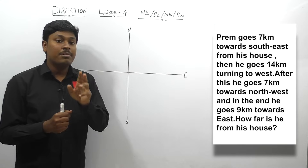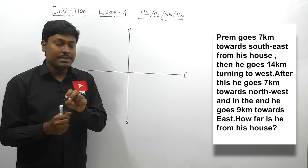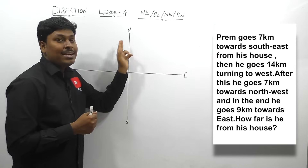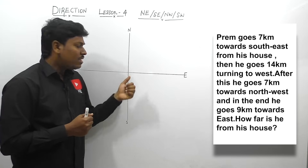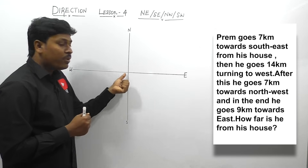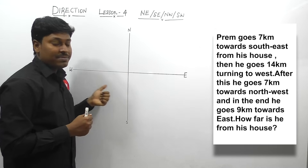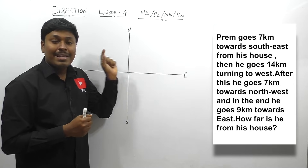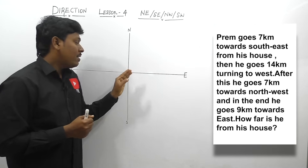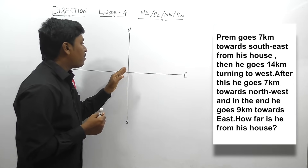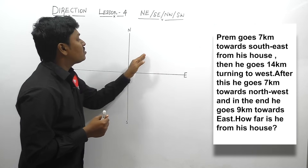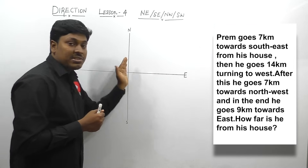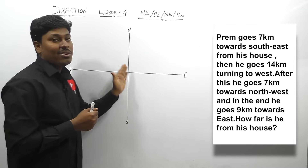Why? Because in lesson number 2 and lesson number 3, from the starting point, a man moves exactly towards north, or from the starting point, a man moves exactly towards west or south or east. But in lesson number 4, from the starting point, a man moves towards north-east, or towards south-east, south-west, or north-west.